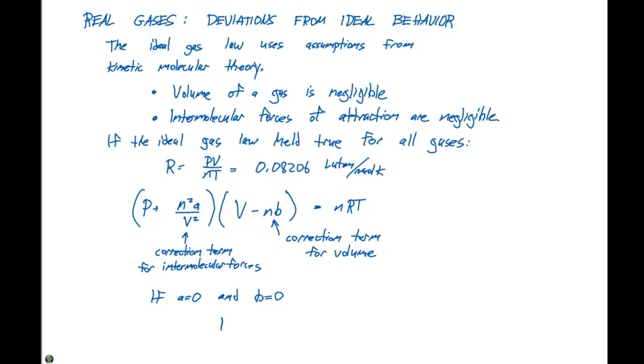this equation simplifies to PV equals NRT. If you have a large value of A and a large value of B, we're going to deviate from ideal behavior.